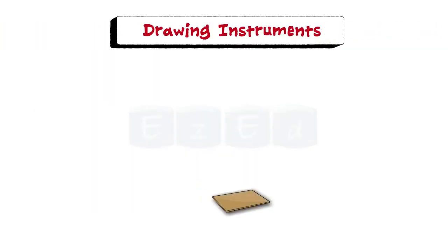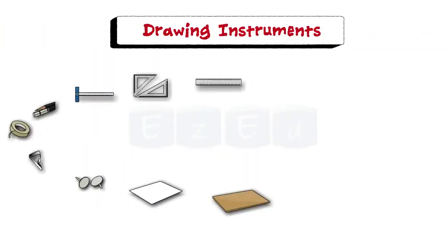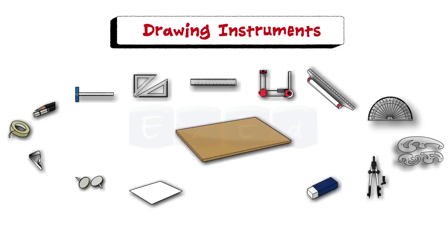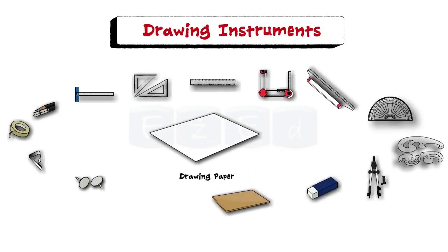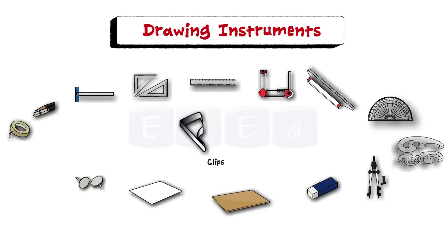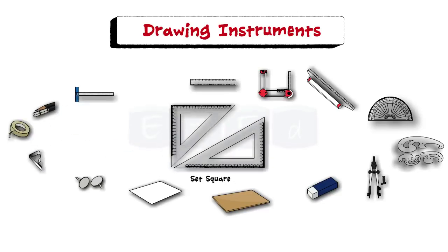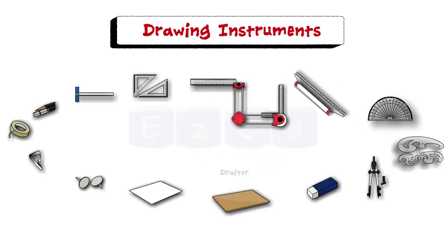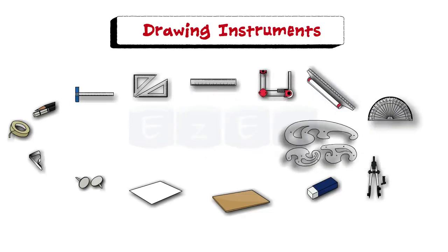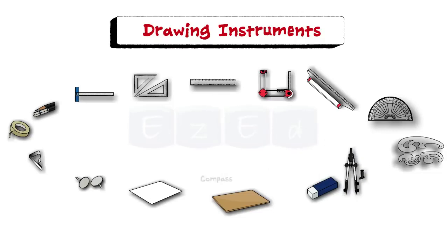Let us see different drawing instruments used in engineering drawing. In this we have a drawing board, drawing paper, pins, clips or adhesive tapes, pencils, T-square, set square, scale, drafter, roller scale, protractor, French curves, compass, and eraser.